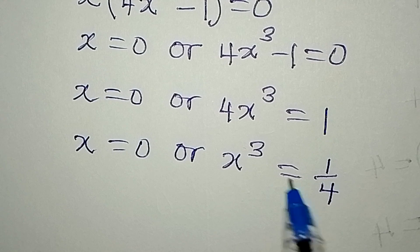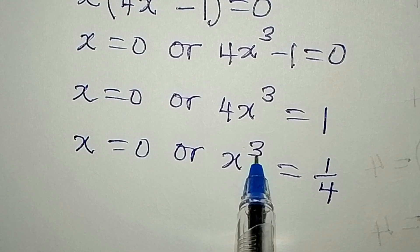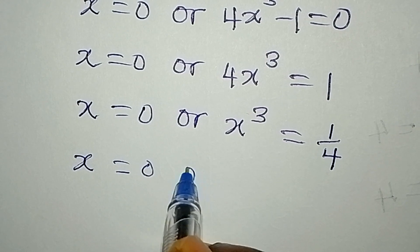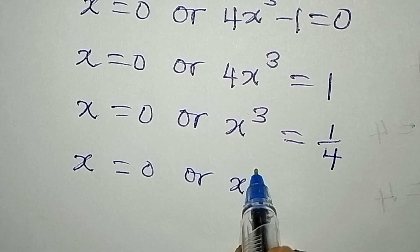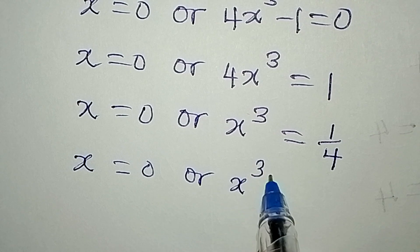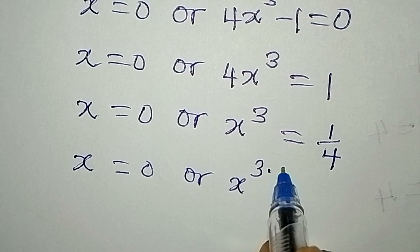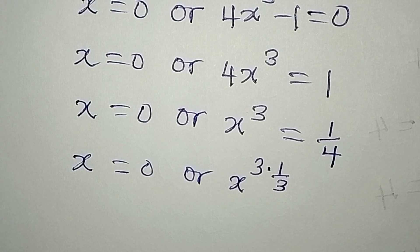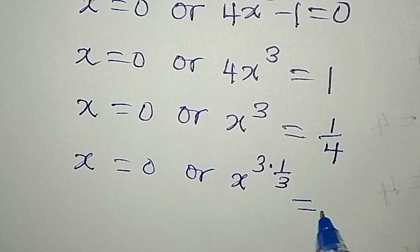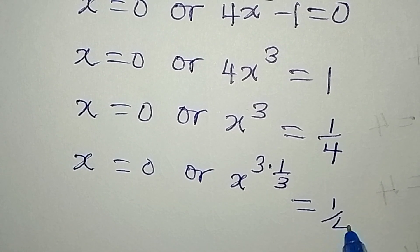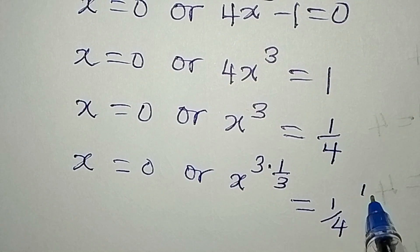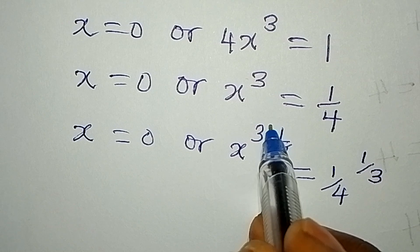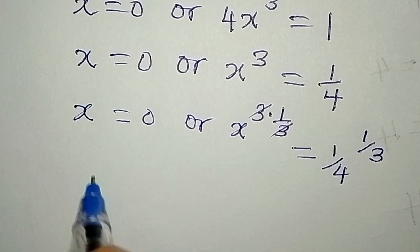And now what do we do? Eliminate this from here, so that if we do that we'll be having x equal to 0, or x to the power of 3 times 1 over 3. This is how to eliminate the power, multiply it by its reciprocal. That will be equal to 1 over 4 to the power of 1 over 3.